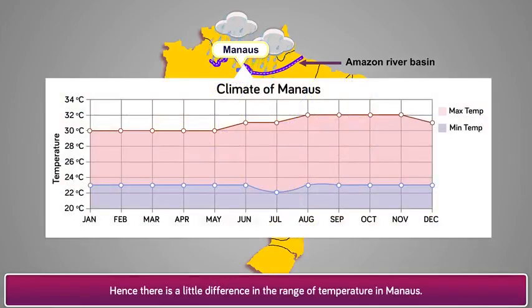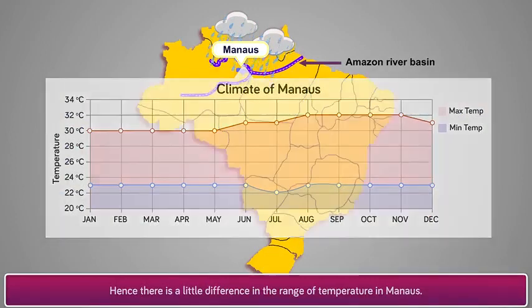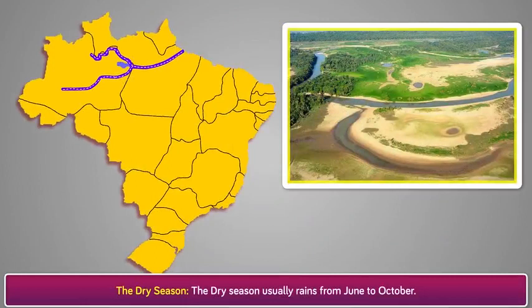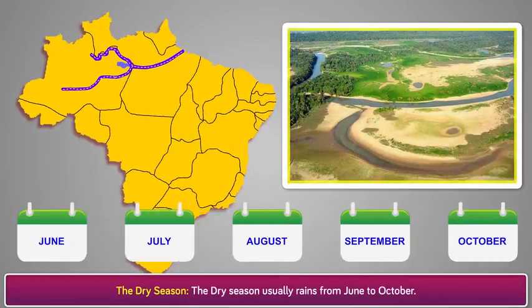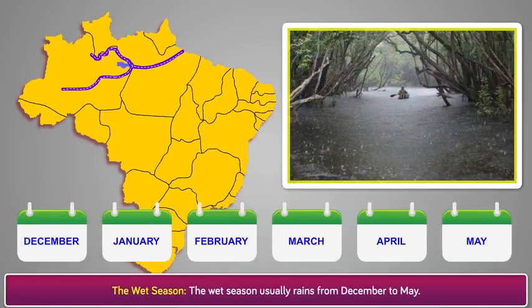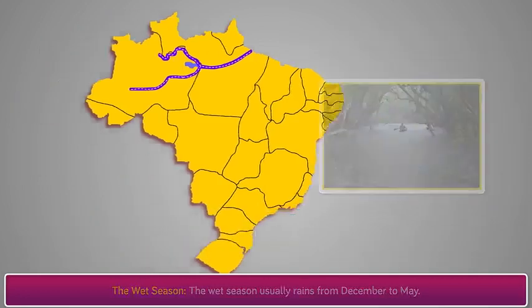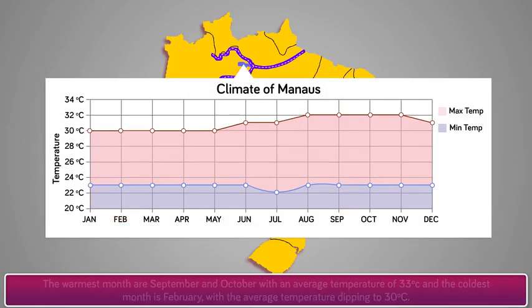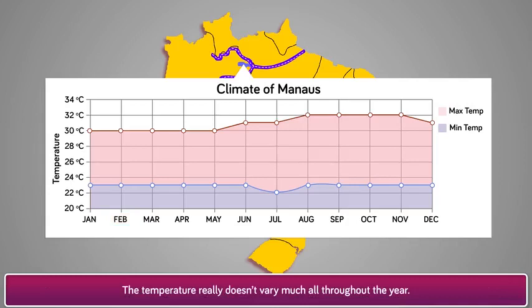Hence, there is little difference in the range of temperature in Manaus. Reason 4: There are two seasons in Manaus. A: The dry season, which usually runs from June to October. B: The wet season, which usually runs from December to May. Reason 5: The warmest months are September and October with an average temperature of 33 degrees Celsius, and the coldest month is February with the average temperature dipping to 30 degrees Celsius. The temperature really doesn't vary much throughout the year.